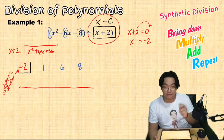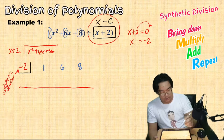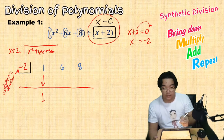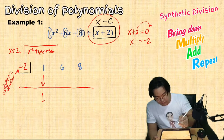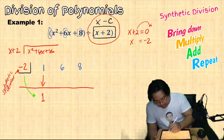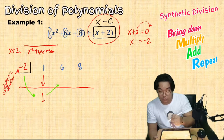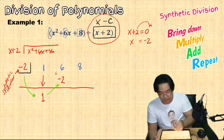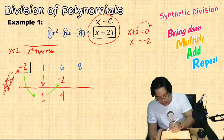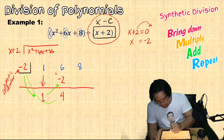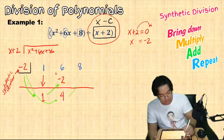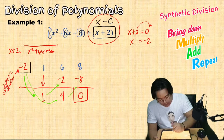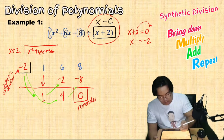Now we perform the synthetic division. Step 1: bring down the 1 under the bar. Step 2: multiply the synthetic divisor negative 2 by 1, placing the answer below 6 — that gives negative 2. Step 3: add 6 plus negative 2 to get 4. Repeat: multiply negative 2 by 4 to get negative 8, then 8 plus negative 8 is 0. This last term is our remainder.